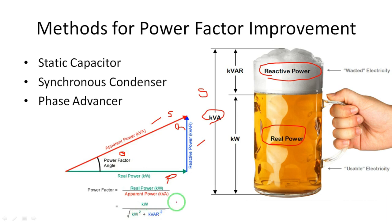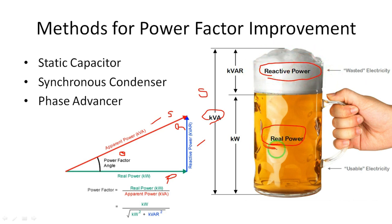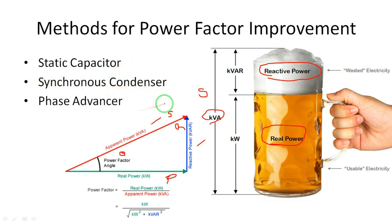We are paying the bill for the combination of both real and reactive power. We need to decrease this wasted reactive power so that we pay only for the useful real power. That is our aim. To decrease this reactive power, there are three methods: the static capacitor method, the synchronous condenser method, and the phase advancer method.